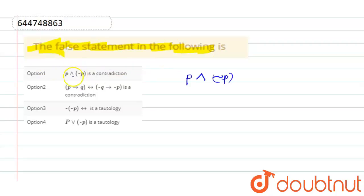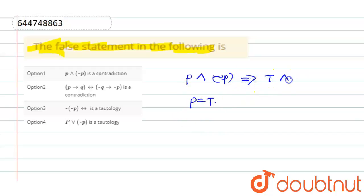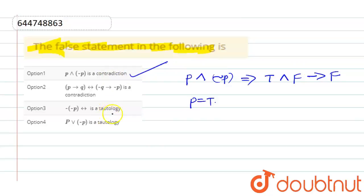We can see that p AND negation p is a contradiction. Suppose p equals true. Then true AND negation of p, that is false: true AND false gives false. False is nothing but a contradiction, so this is the right statement.